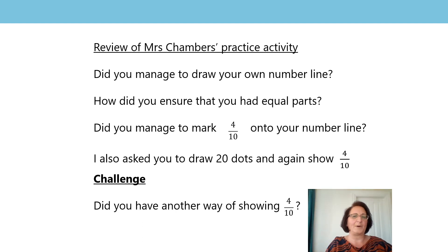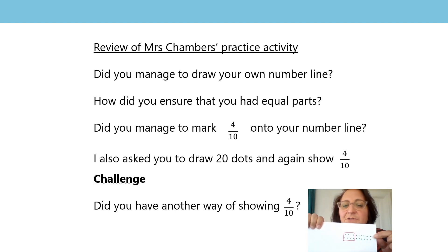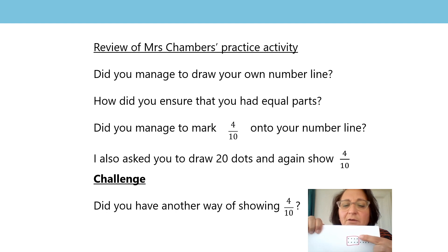What about for your dots? I drew my dots — I've got twenty of them. I've visualised where my ten parts might be, so those were my columns, and I drew a ring around four of those columns: one, two, three, four — so four tenths.